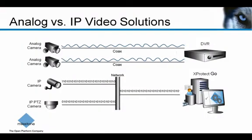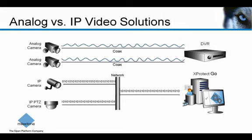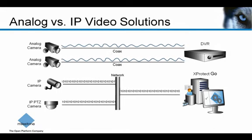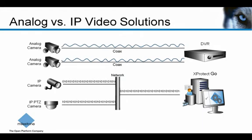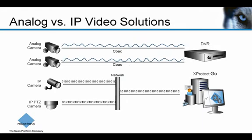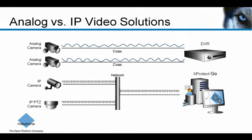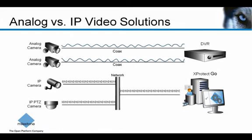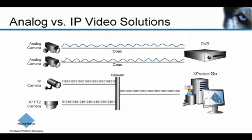The upper part of this diagram shows a simple, traditional analog network, with a couple of cameras, a recorder, and a dedicated network of coax cables carrying the analog signals from the cameras to the recorder. Underneath is the corresponding IP video solution. As you can see, the dedicated coax network is simply replaced by a general purpose IP network.